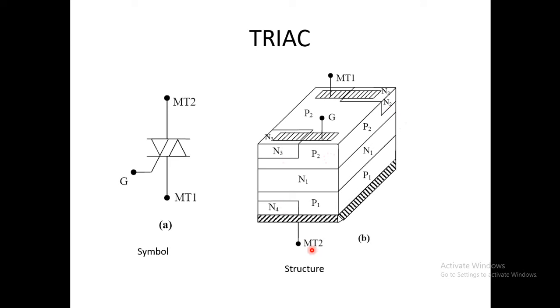Now, terminal MT2, that is main terminal 2, is connected to two layers, N4 and P1. Main terminal 1, that is MT1, is connected to P2 and N2. Like this, TRIAC structure is formed.